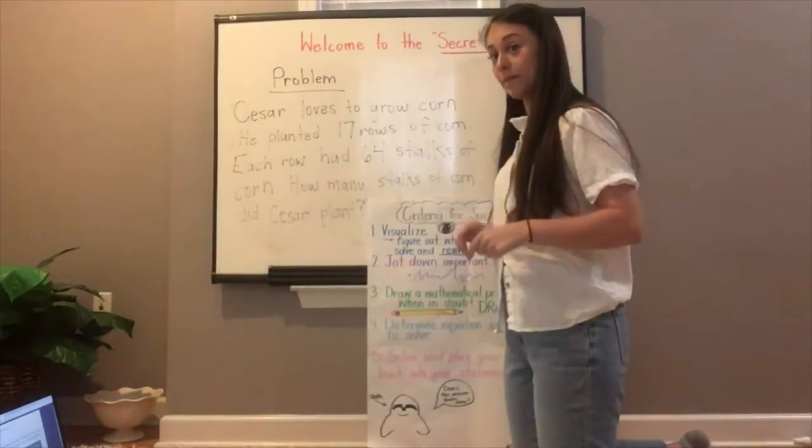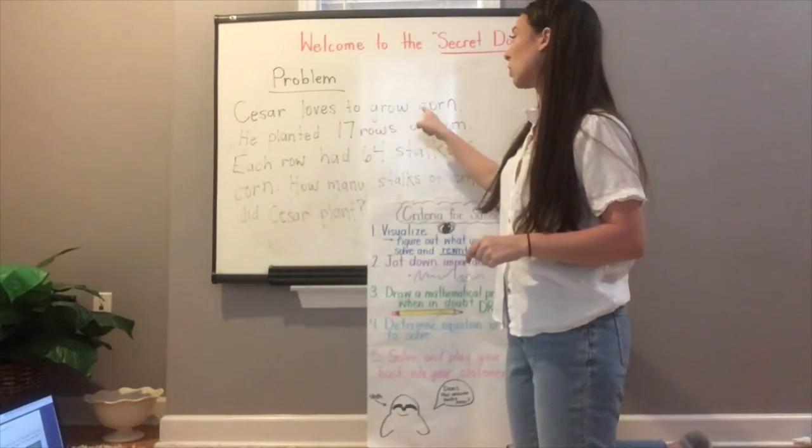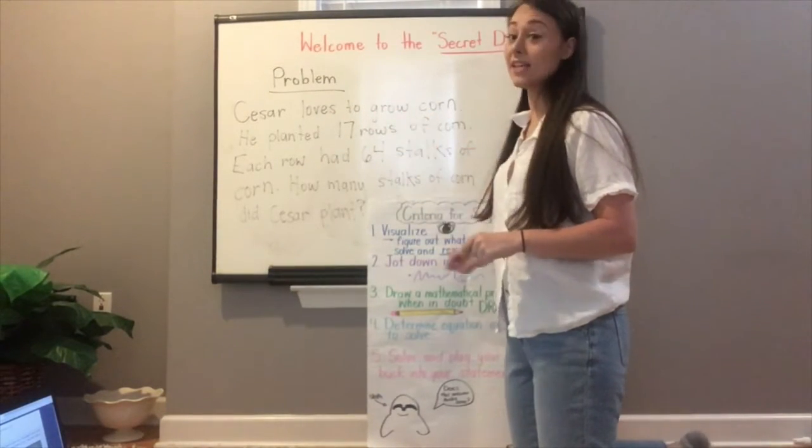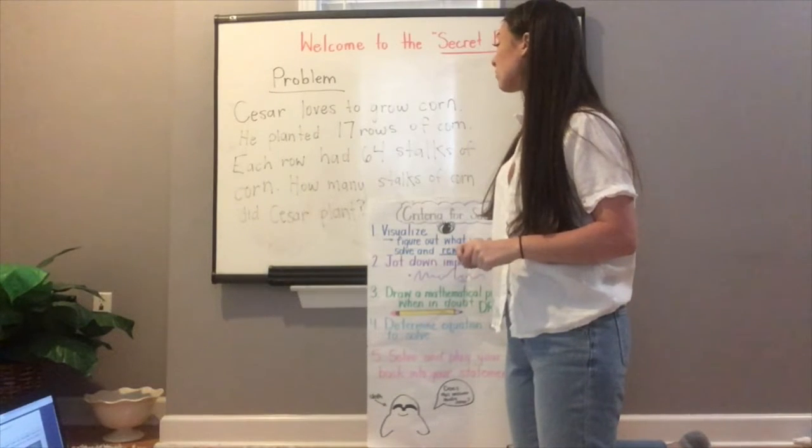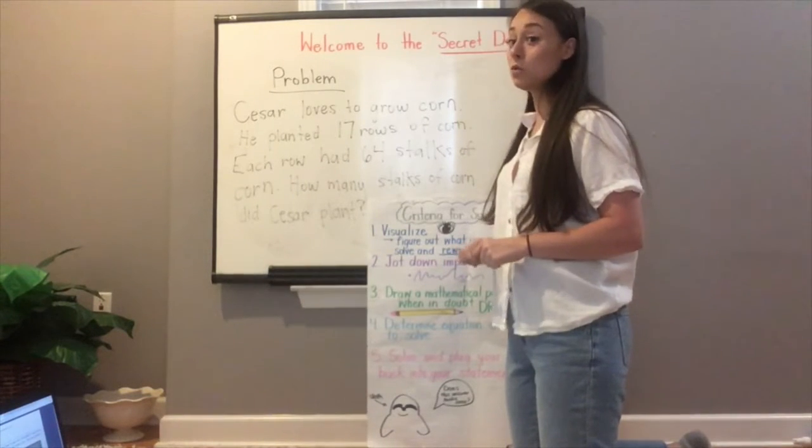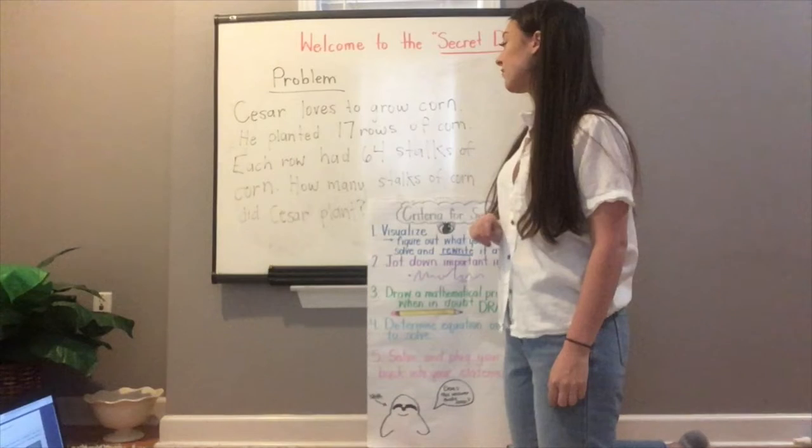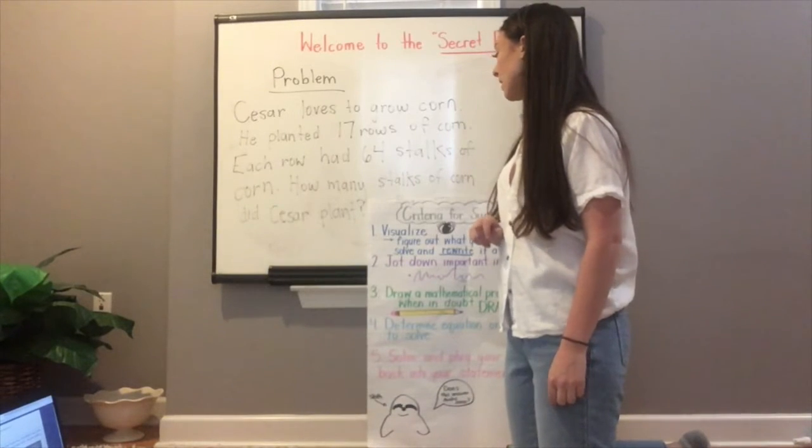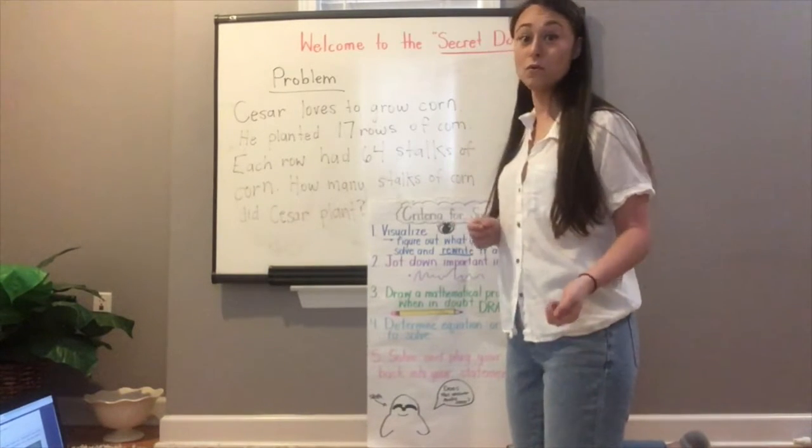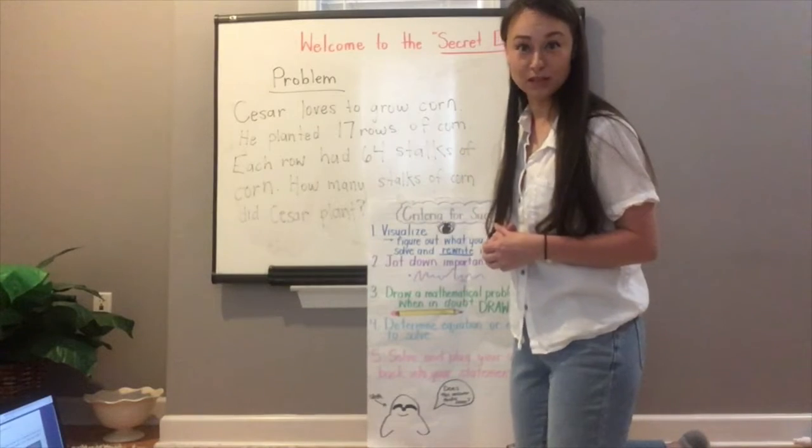Your problem. Caesar loves to grow corn. He planted 17 rows of corn. Each row had 64 stalks of corn. How many stalks of corn did Caesar plant?